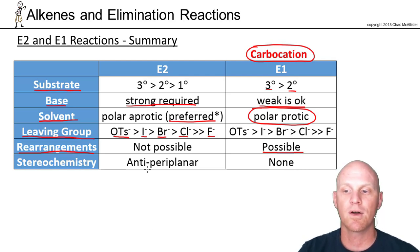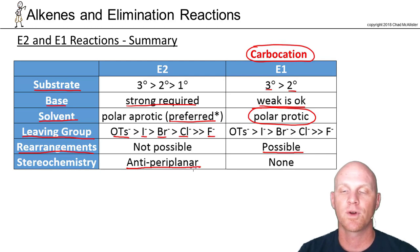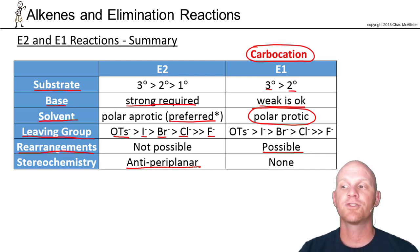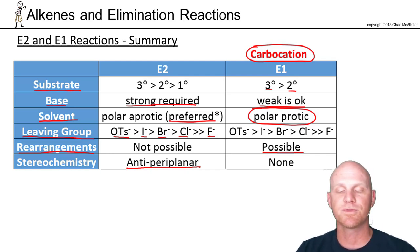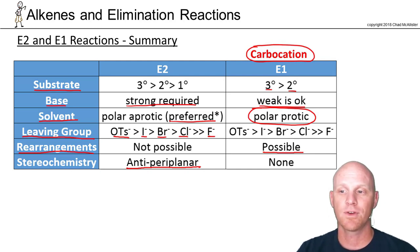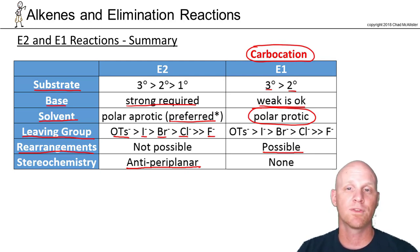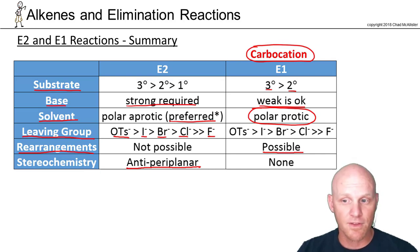Finally, some stereochemistry: for E2 to occur, there is an anti-periplanar requirement — the hydrogen and the leaving group must be anti-periplanar. E1 has no such requirement. In E1, the hydrogen and the leaving group are involved in two totally different steps, so there is no geometric requirement between them whatsoever.